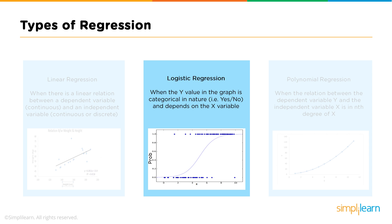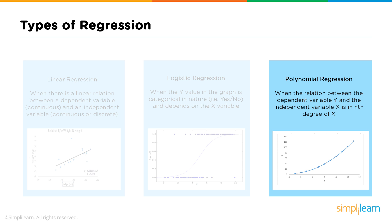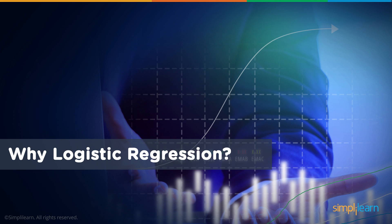Logistic regression is when the y value in the graph is categorical in nature. For example, yes, no, purchased, don't purchase, voted, did not vote. And it depends on the x variable. Notice the trend line for linear regression and the line for logistic regression. They're different. More on that later. And there's polynomial regression as well. When the relation between the dependent variable, y, and the independent variable, x, is in the nth degree of x. Sometimes we say an nth degree polynomial of x. In this picture, you can see that the relationship is not linear. There's a curve to that best fit trend line.